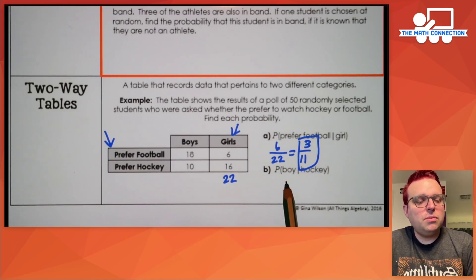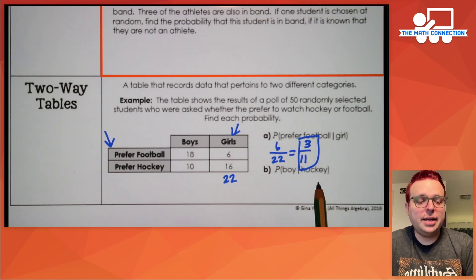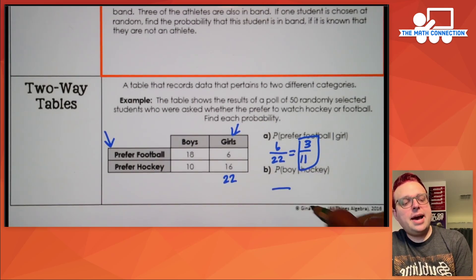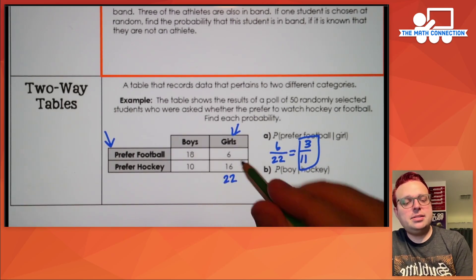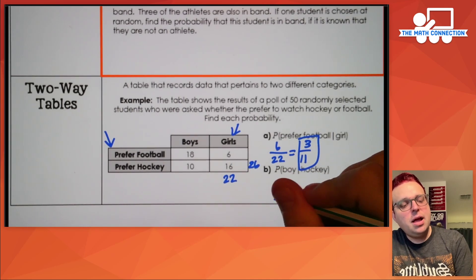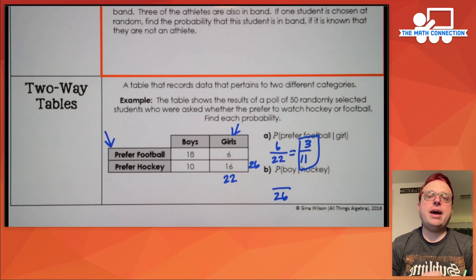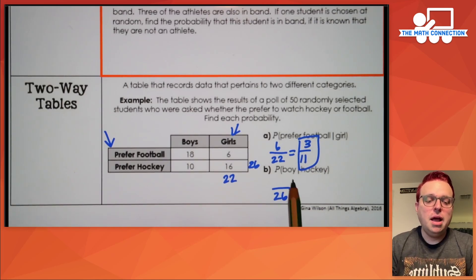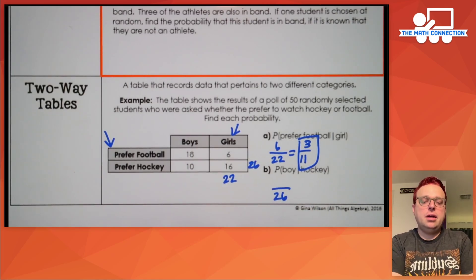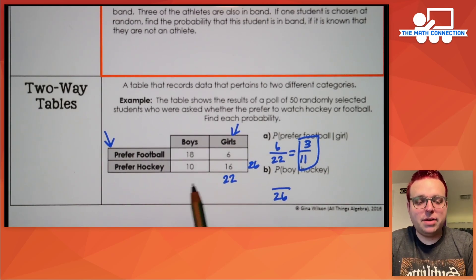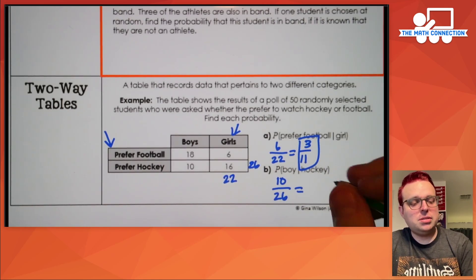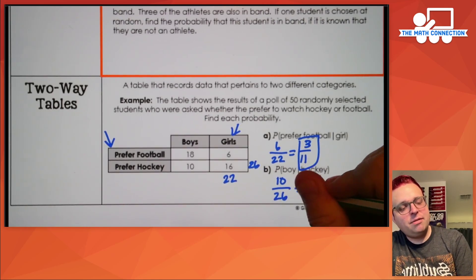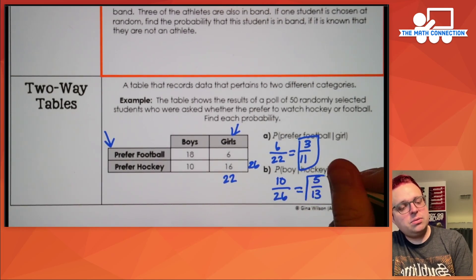The second question asks: what's the probability of choosing a boy given that they prefer hockey? On the denominator, you need the total number of people who preferred hockey overall — that's 10 plus 16, which is 26. In the numerator you need the compound probability that they are a boy who prefers hockey, and that number is 10 according to our table. Reduce 10 over 26 and you get five out of 13.